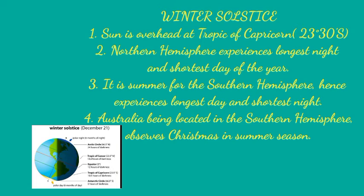On 22nd of December, the length of night is the longest of the year in the northern hemisphere, while in the southern hemisphere it is the opposite — the day is the longest and the night is the shortest. This phenomenon caused by seasonal changes due to the revolution of the Earth is known as the winter solstice.